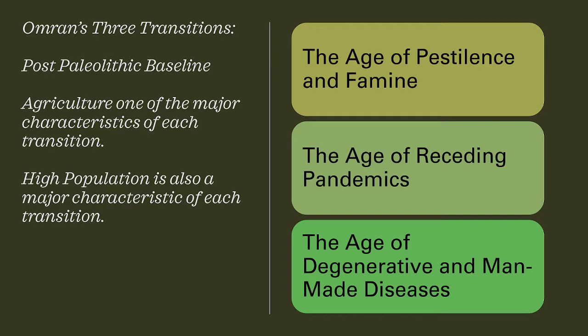Omran's three transitions all take place post the Paleolithic baseline — the time period in which humans were mostly hunter-gatherers living in small bands. Post the Paleolithic baseline is agriculturalism, and agriculture is one of the major characteristics of each transition, allowing for a high population density, which is also a major characteristic of each transition.